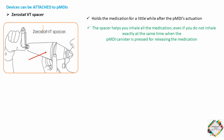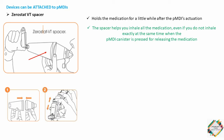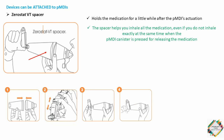To use the Zerostat VT spacer: assemble it by firmly pushing the two halves together and rotating. Remove the cap from the inhaler mouthpiece and shake the inhaler. Insert the inhaler firmly into the opposite end of the spacer. Press down on the canister to release the dose into the spacer. Breathe out fully through the mouth, then immediately place the lips firmly around the mouthpiece to create a good seal — do not bite it. Breathe slowly and deeply, inhaling the medicine through the spacer. Remove the spacer from the mouth and hold your breath for about 10 seconds. Breathe out normally. If a second dose is required, wait one minute and repeat steps 2 to 5.